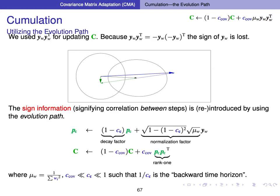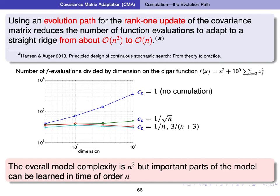On the Cigar function, CMA-ES with and without cumulation is shown with different cumulation coefficients. The plot shows number of function evaluations to reach a target value versus dimension, divided by dimension. For cumulation factor 1/√n or 1/n, the graphs are flat — evaluations scale linearly with dimension. Without cumulation, it scales close to quadratically with dimension. By this simple trick, we can reduce function evaluations from almost n² to n — a surprising result, as we still build a covariance matrix with n² degrees of freedom, but can learn important aspects already in time n. The evolution path modulates the learning rate on the covariance matrix in certain directions.